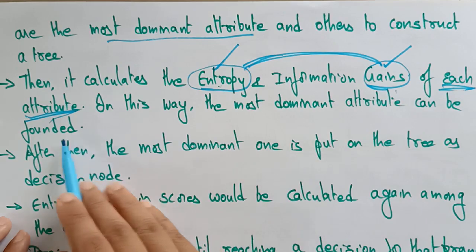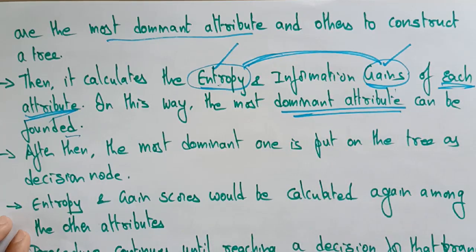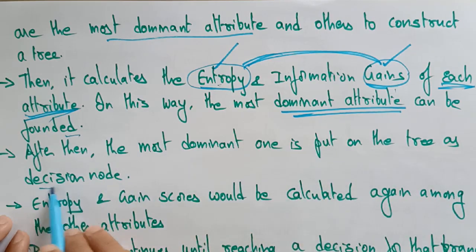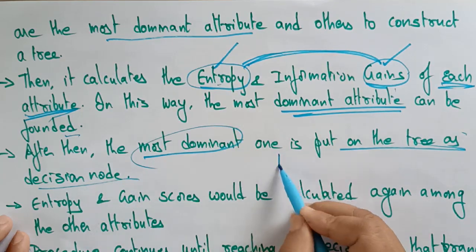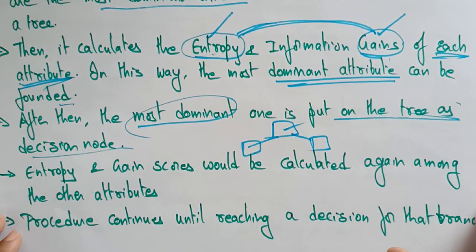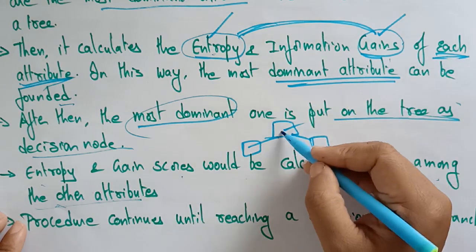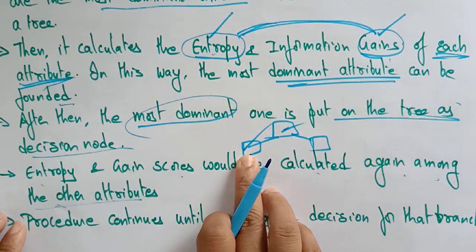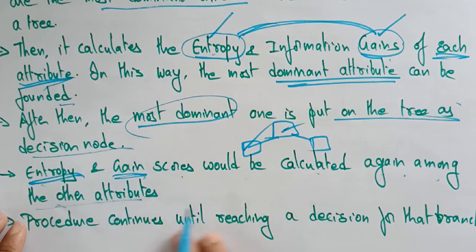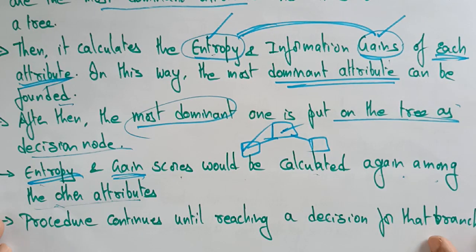In this way, the most dominant attribute can be found — the one having the highest value. That most dominant attribute is then placed on the tree as a decision node. Then the entropy and gain scores are calculated again among other attributes. You perform this again on another attribute to check which one has the highest dominance value to make the decision tree.